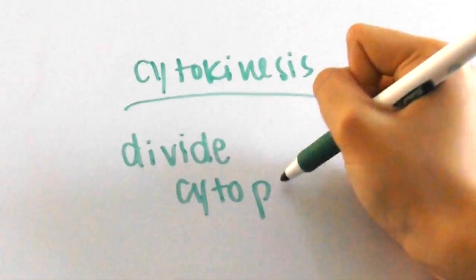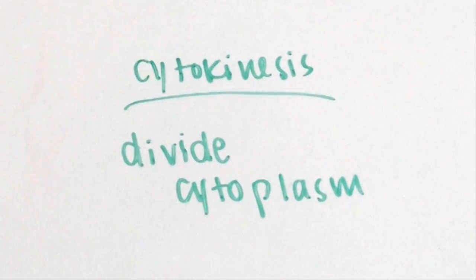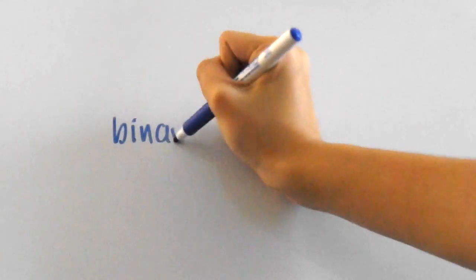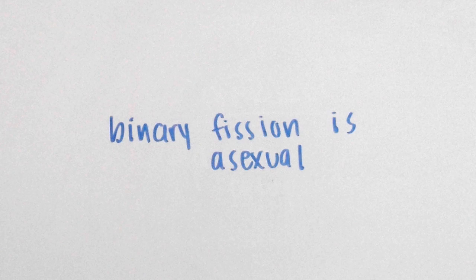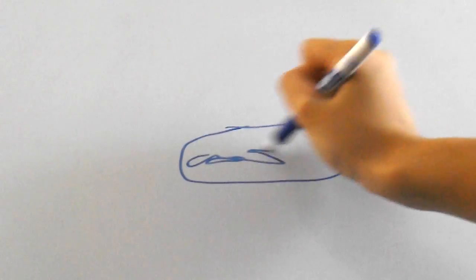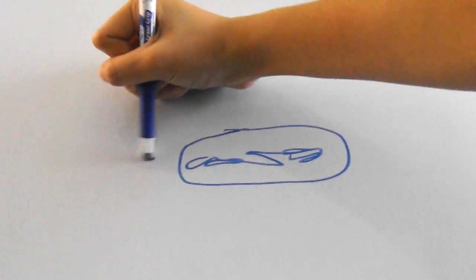So those are the basics of mitosis, and now let's move on to binary fission. Binary fission is extremely similar to mitosis, but it's an asexual form of reproduction, meaning that organisms can reproduce this way without having to mate with others. Binary fission is commonly seen in bacteria.